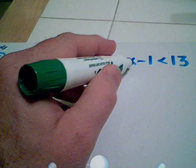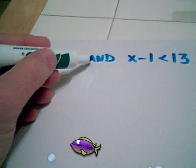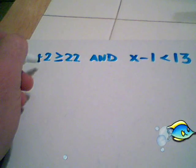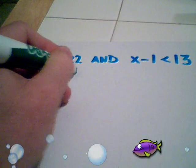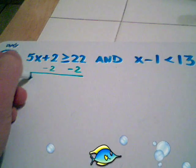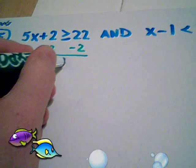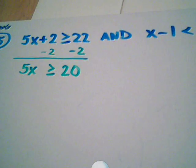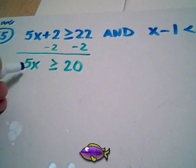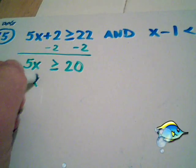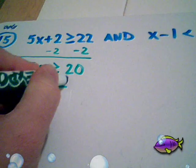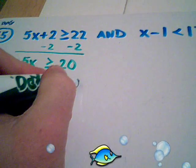Subtracting 2 from both sides we have 5x is greater than or equal to 20. And when I divide both sides of this inequality by 5, I get that x is greater than or equal to 4. The word 'and' of course is still in the middle.